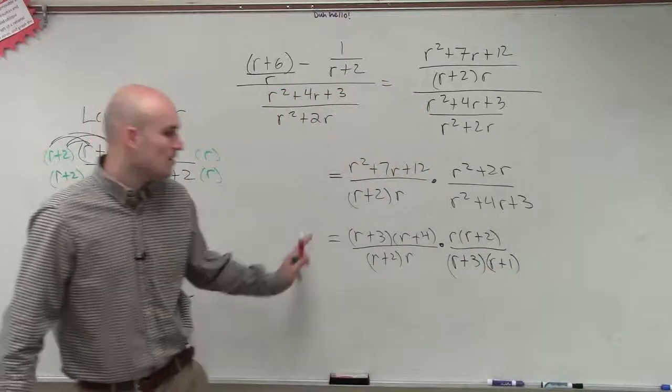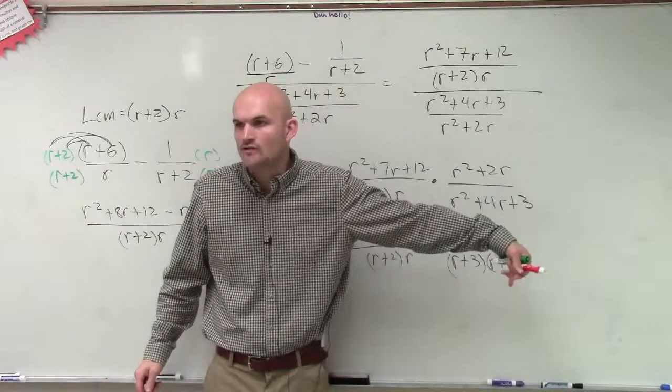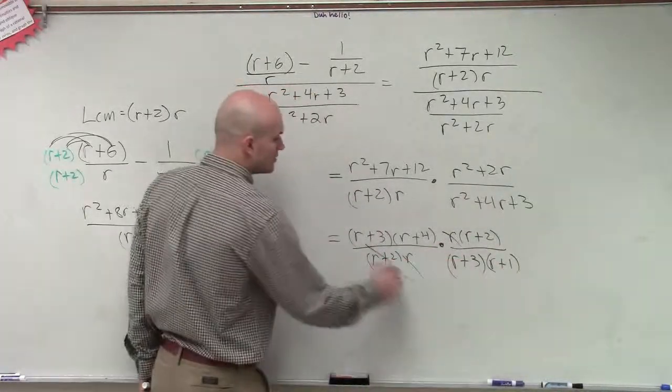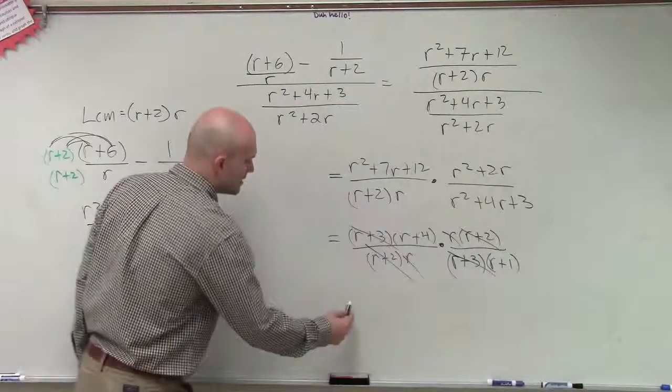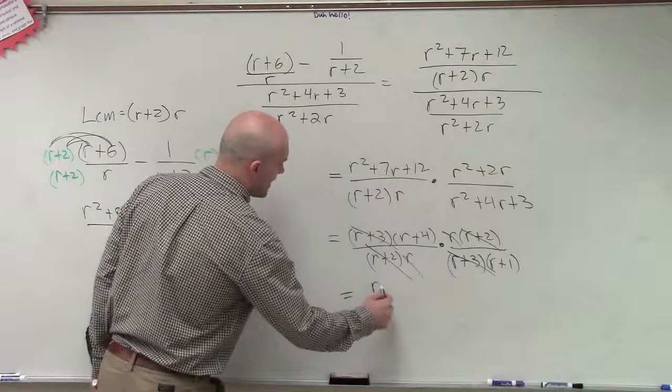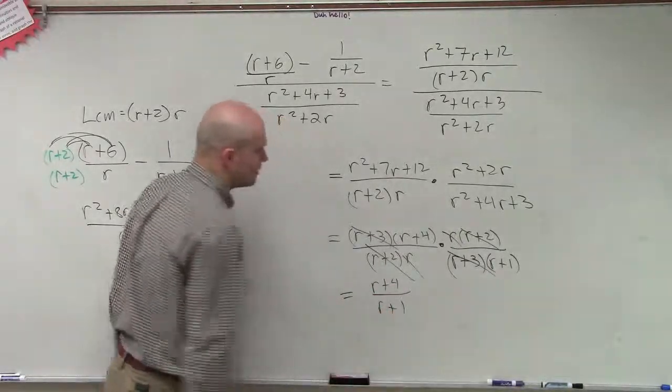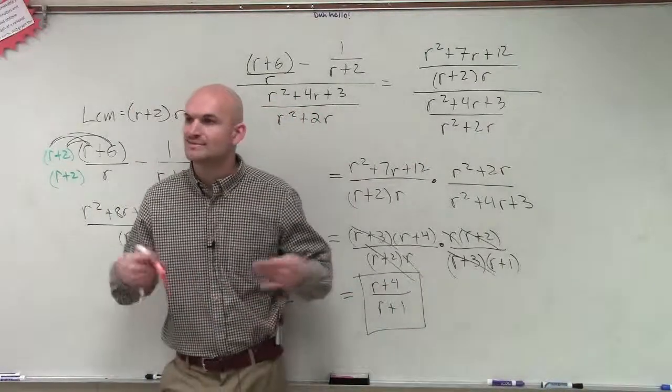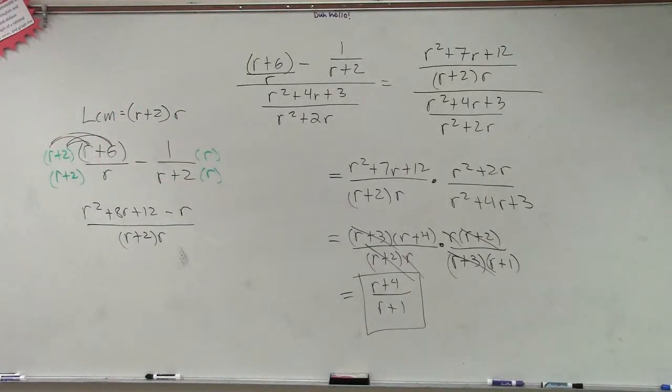So now that I've factored everything out and we're multiplying everything, now I just need to see what terms divided by themselves are going to equal 1. Well, we know the r and the r. The r plus 2 divided by r plus 2. r plus 3 divided by r plus 3. And that's going to leave us with a final answer of r plus 4 divided by r plus 1. So there we go. OK. Ta-da.